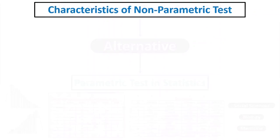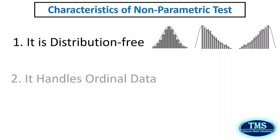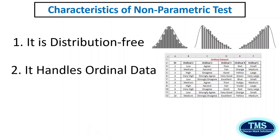The following points describe the characteristics of non-parametric tests. First, it is distribution-free. That is, it does not assume that the data follows a specific probability distribution. This makes them more robust when the assumptions of parametric tests are violated, such as when the data distribution is skewed. Second, it handles ordinal data. That is, they can handle data measured on an ordinal scale, which only preserves the order of values — for example, rankings.